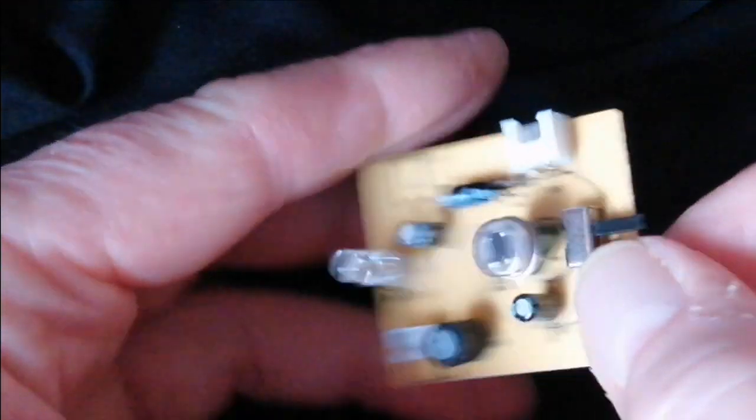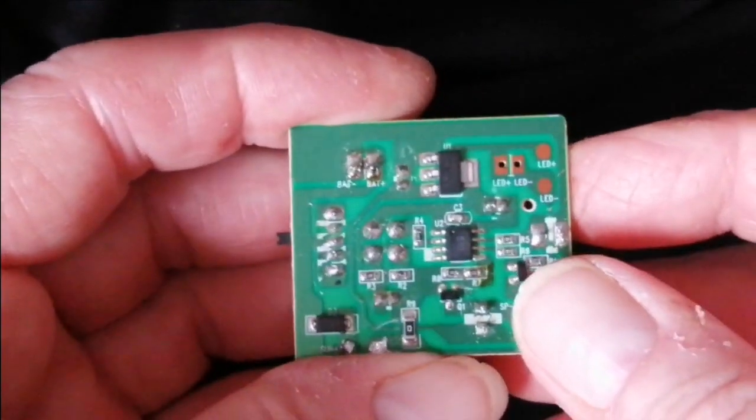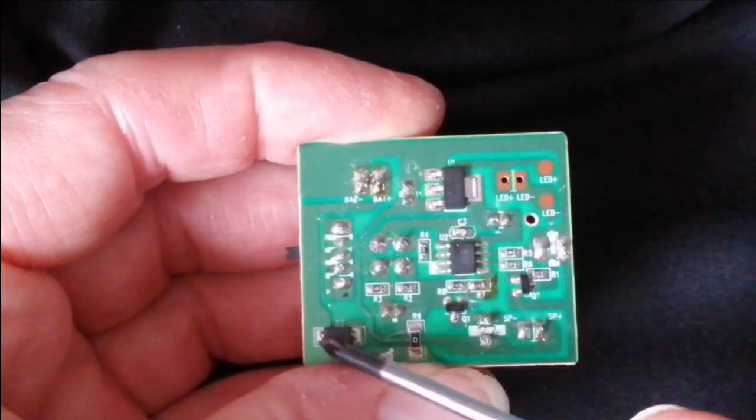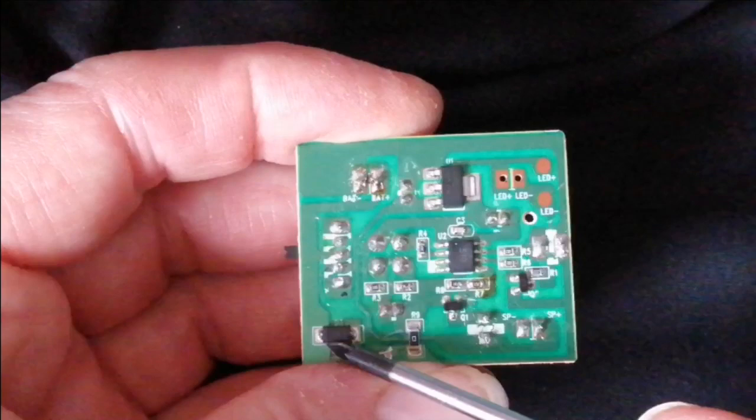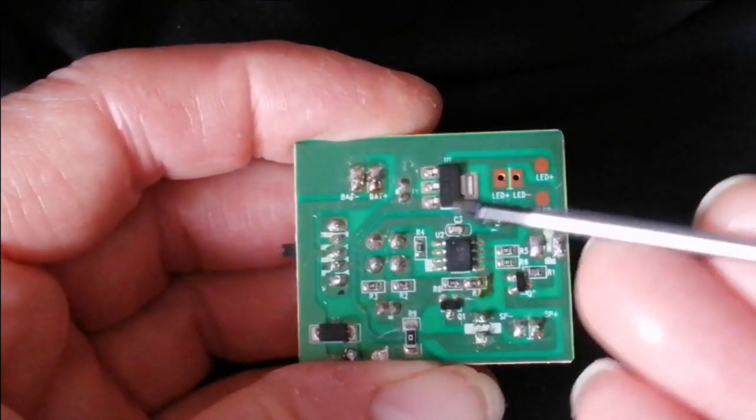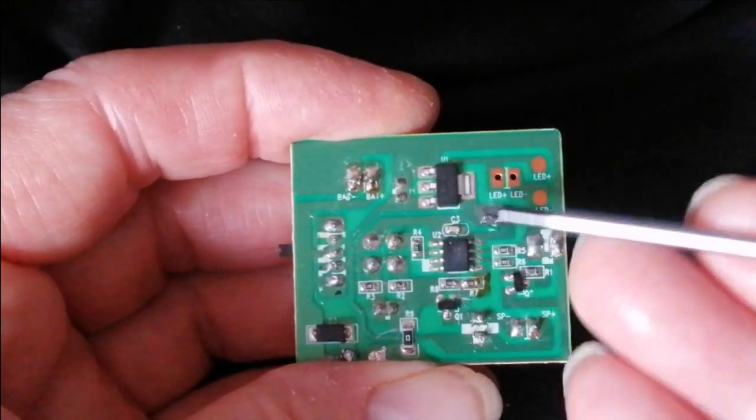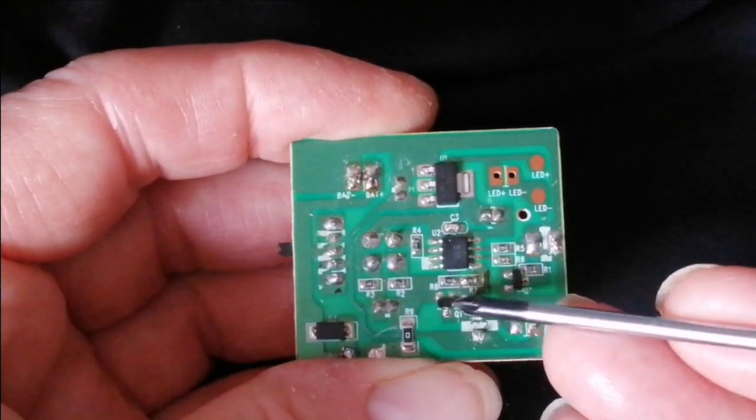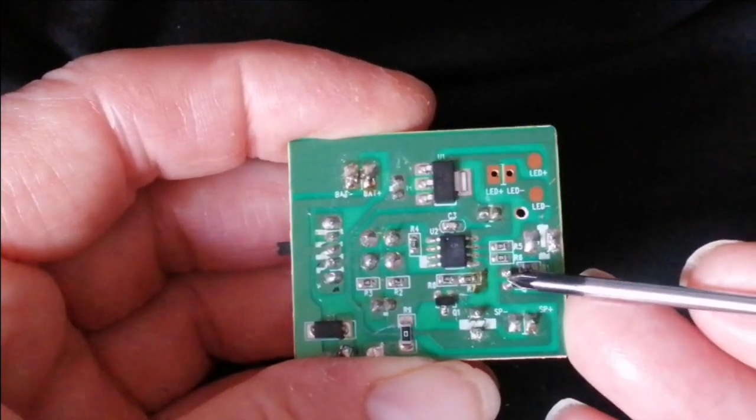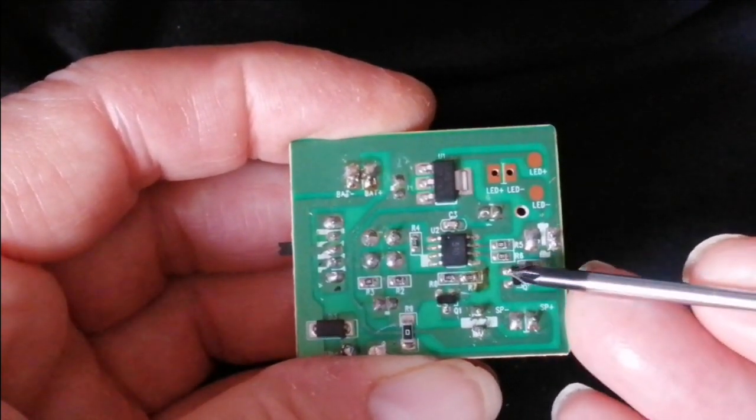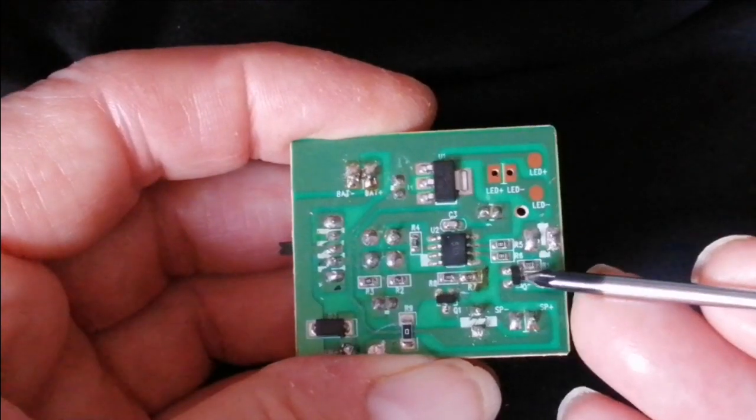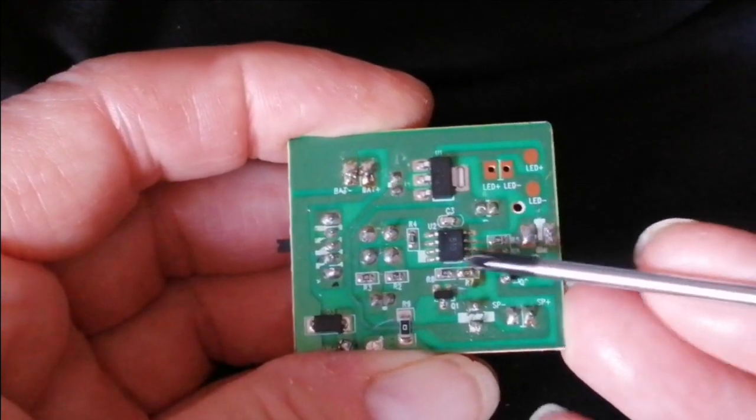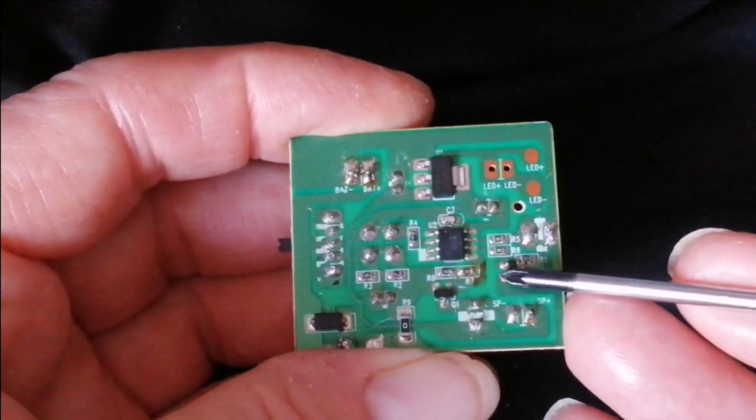On the back side, you've got the Schottky diode for charging the battery, the PIC which is the heart of the system, the 3.3 volt regulator, a couple of transistors to drive - that one drives the ultrasonics and that one drives the flashing LEDs which aren't fitted. So they fitted these components for nothing.